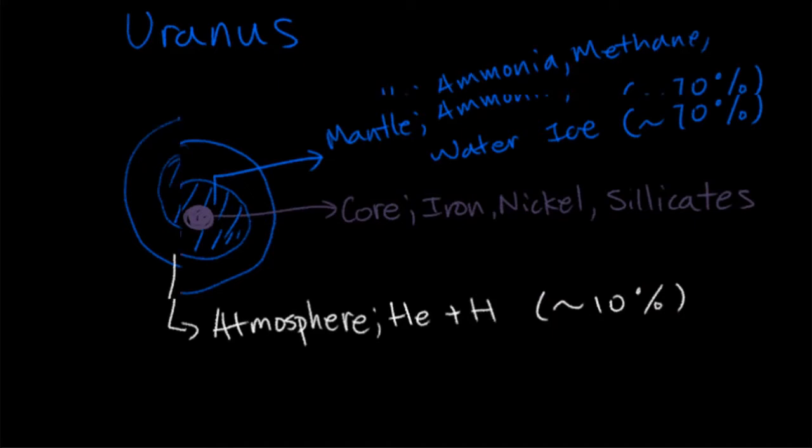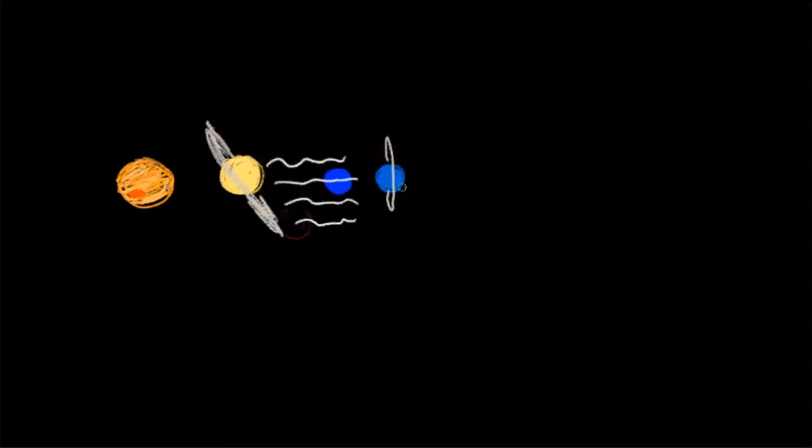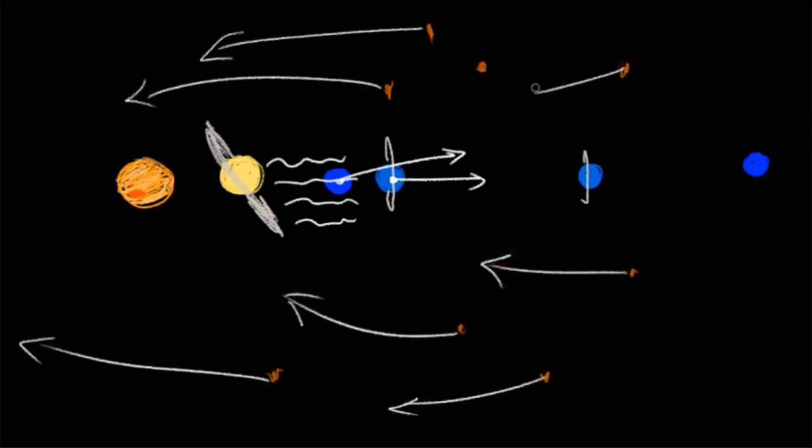Neptune and Uranus are also thought to have formed nearer to the sun in the order of Neptune and Uranus. Eventually, the combined gravitational influence of Jupiter and Saturn pushed Neptune and Uranus further out into their orbits. This caused gravitational disturbances that flung much debris into the inner solar system, resulting in the late heavy bombardment.